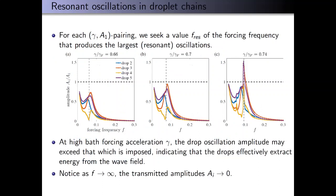For each gamma and A1 pairing, these plots are simulation results we got. The x-axis is the forcing frequency F imposed on the first drop, and the y-axis is the scaled amplitudes of oscillations of the other four drops in response. We see that for some resonant frequency F, we get this peak in the amplitudes of the other four drops. This says there's some forcing frequency for which we get a resonance.